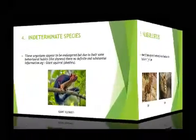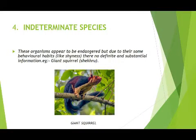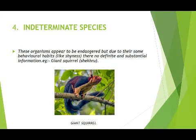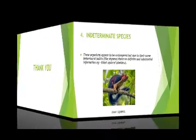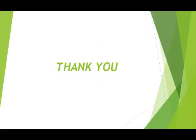Intermediate species means organisms that are endangered because of their behavioral habits. They may be present in large numbers but are not seen due to their shyness, so their definite number is unknown. An example is the giant squirrel, also known as sheikharu.